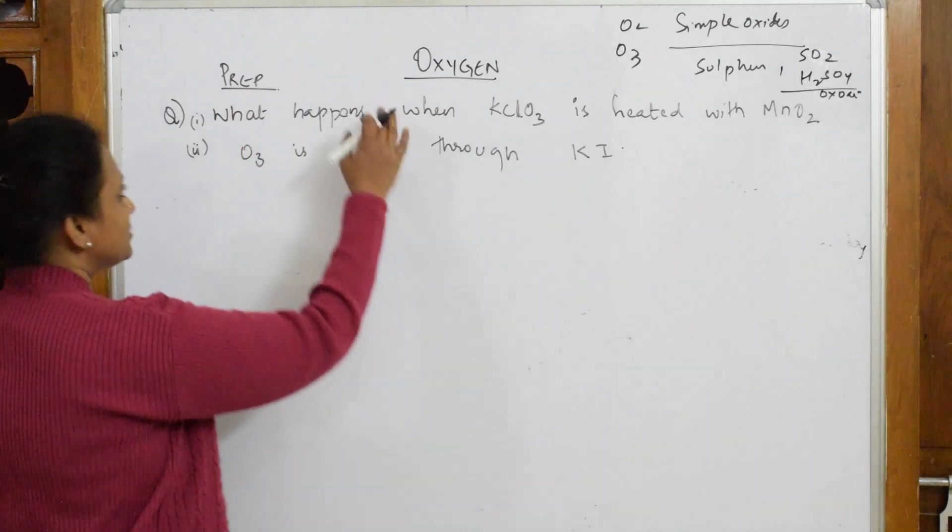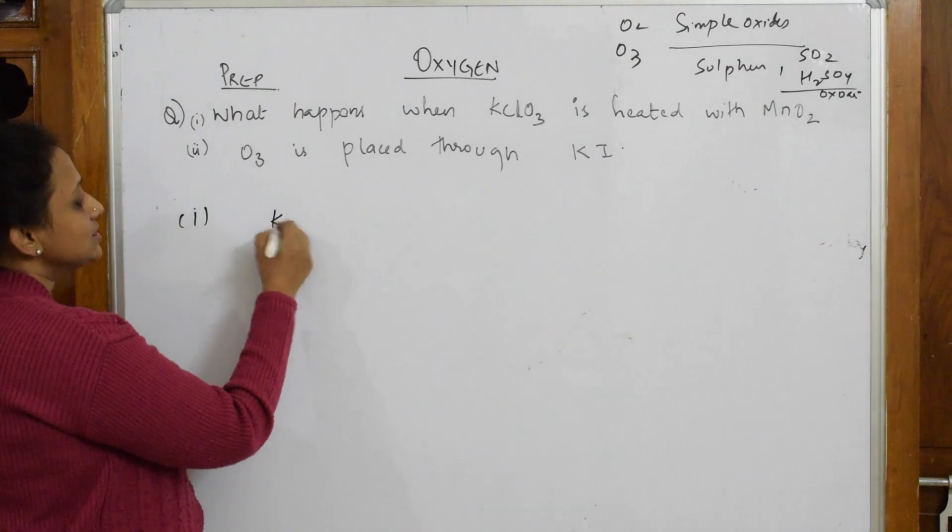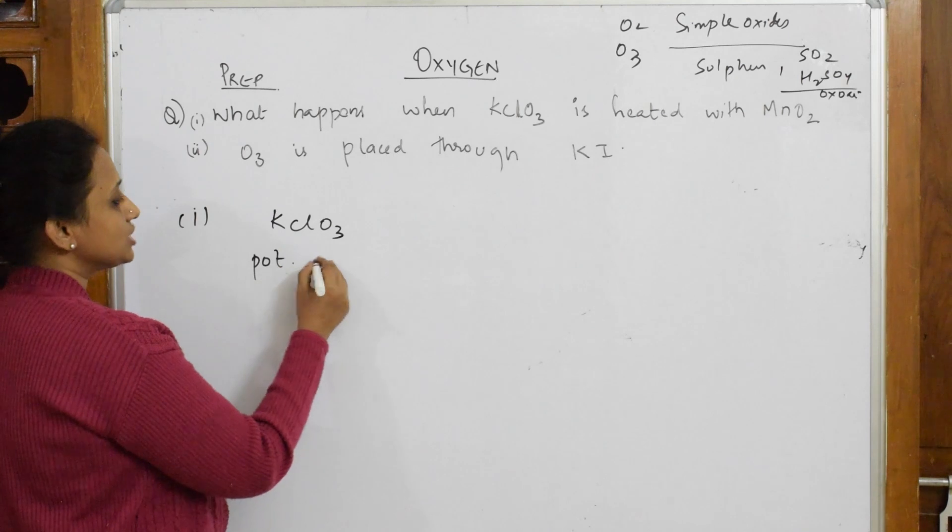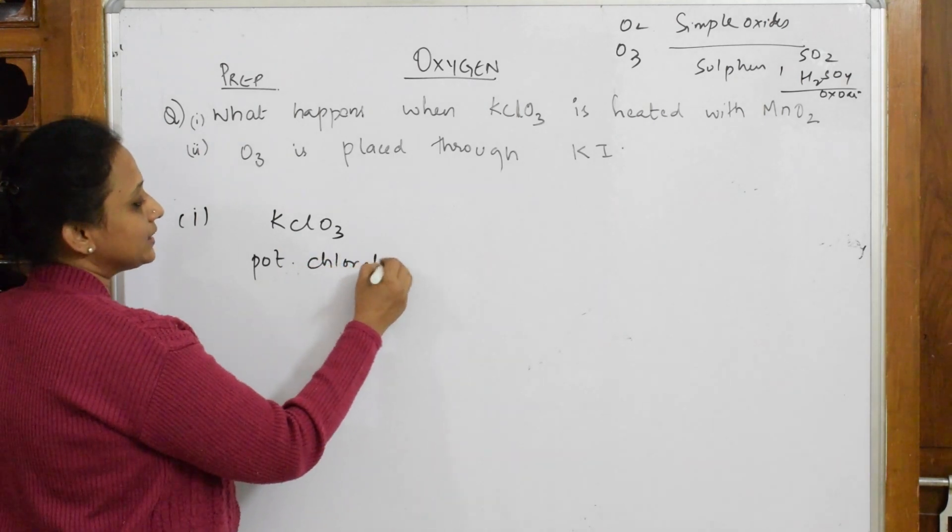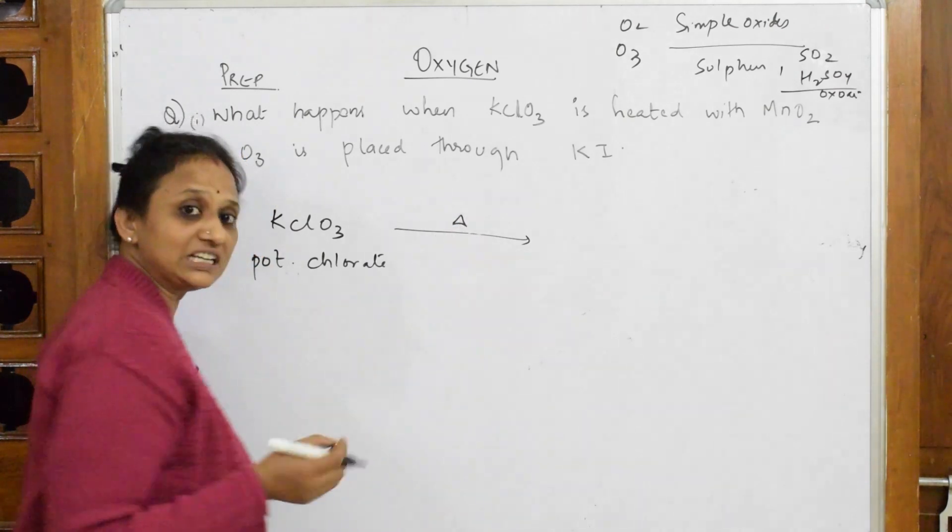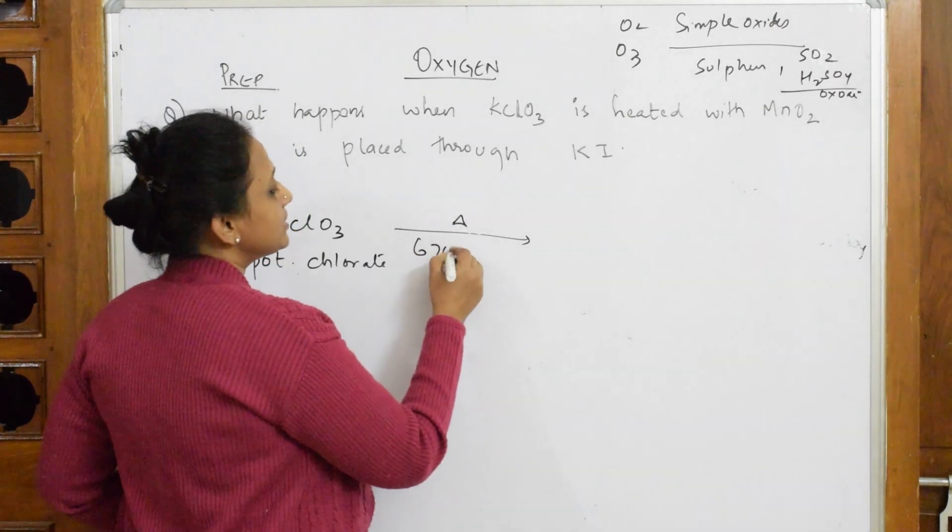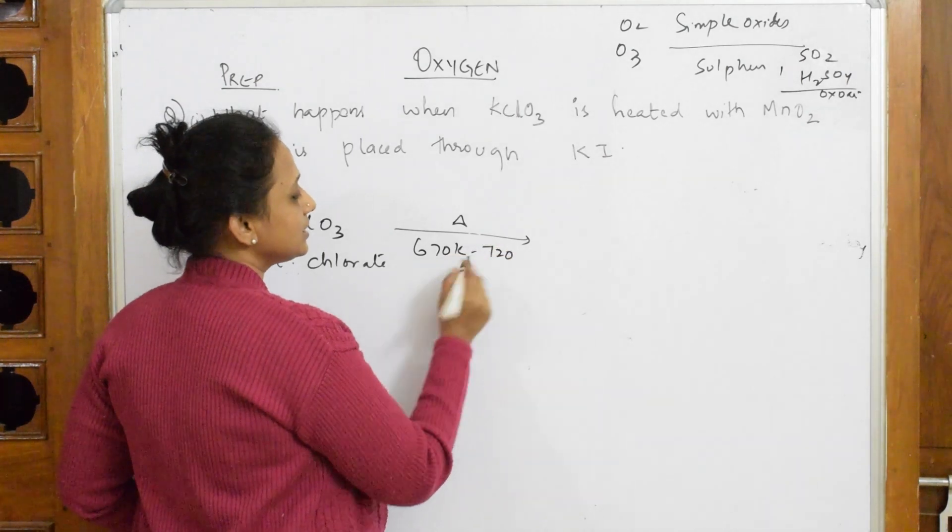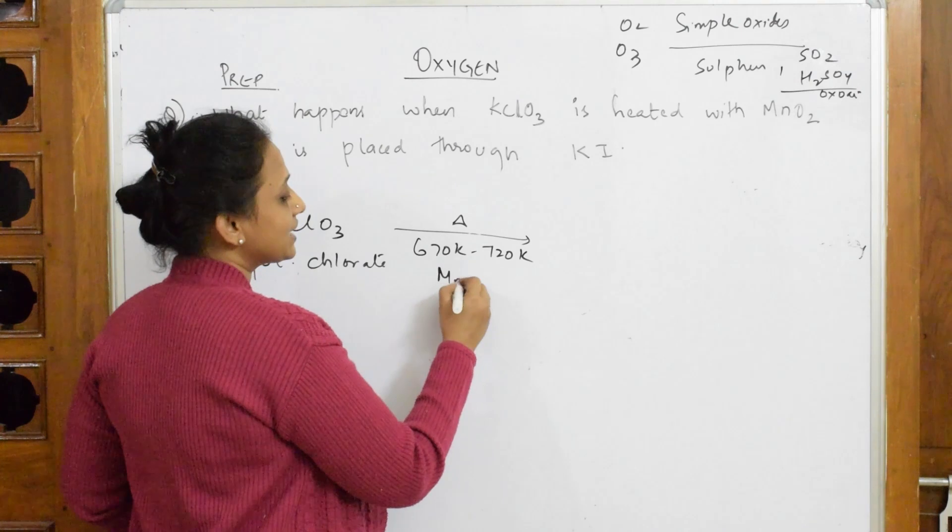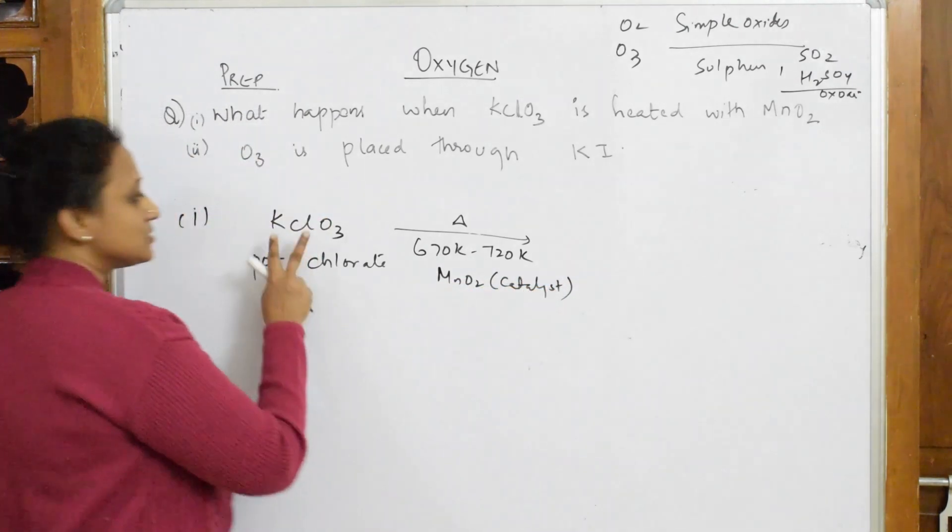First thing, they have given me that reaction. Let us write: potassium chlorate is heated. What does heated mean? You should not leave it at that—we have to write the temperature: 670 to 720 Kelvin. What is the catalyst they have given? Manganese dioxide is acting as a catalyst.